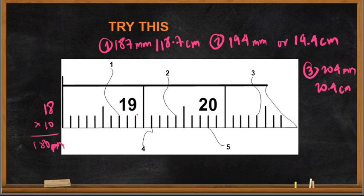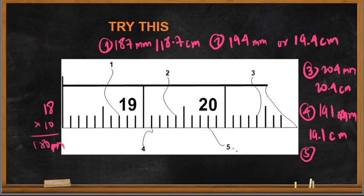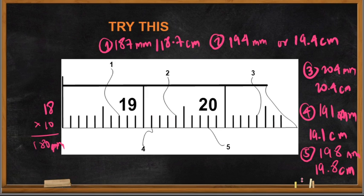For number five: starting at 19 cm, that is 190 mm, then counting 1, 2, 3, 4, 5, 6, 7, 8 lines — so 198 mm. In centimeters, counting 0.1, 0.2, 0.3, 0.4, 0.5, 0.6, 0.7, 0.8 beyond 19 cm, that is 19.8 cm.